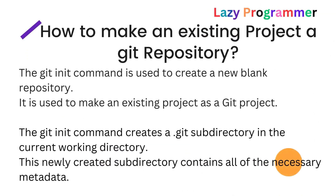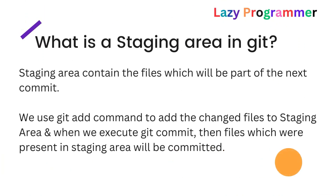Next, an interviewer might ask how to make an existing project a Git repository. Suppose you created a Java project in Eclipse but it's not a Git repository yet. To convert it, we use the git init command — it either creates a new blank repository or converts an existing project into a Git project. The git init command creates a '.git' subdirectory in the current working directory, which contains all the necessary metadata required for tracking files and maintaining the staging area.